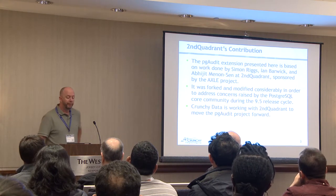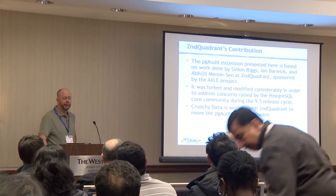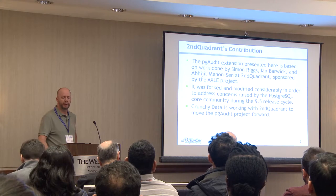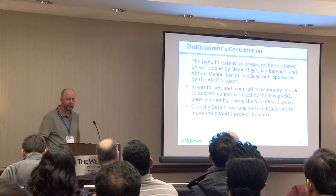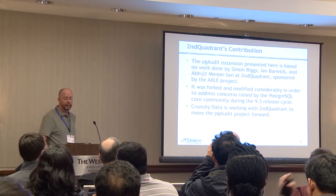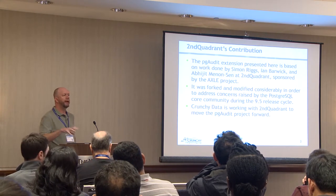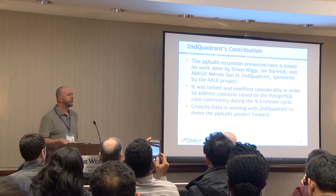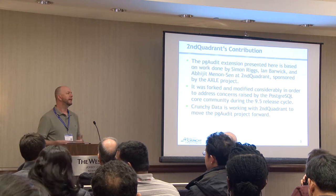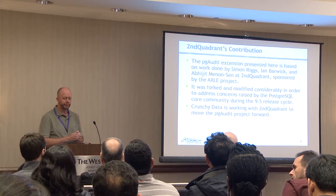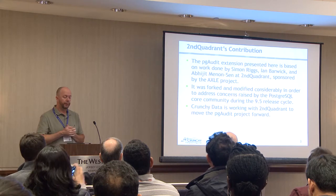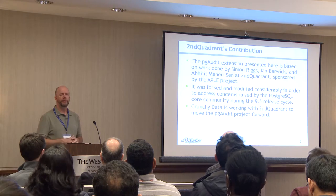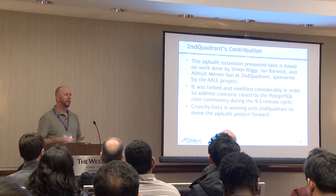Before we start, I'd like to give Second Quadrant a call-out. The extension you're about to see is based on an extension written by Second Quadrant by Simon Riggs, Ian Barwick, and Abhi Geet Benningson. We wanted to add some capabilities and try to get it committed to core, so I took over that extension and added a lot of new functionality and tests. At this point, Crunchy Data and Second Quadrant are in lockstep on the PG Audit module — there's just one PG Audit module that we're both supporting.